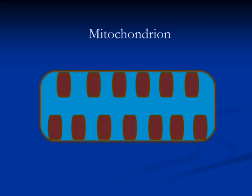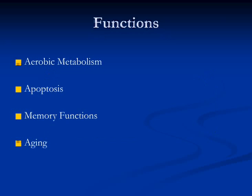These very important organelles are covered with two highly developed and specialized membranes. In the absence of mitochondria, the human body would not be able to use oxygen.